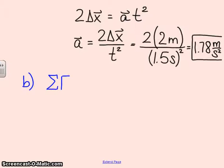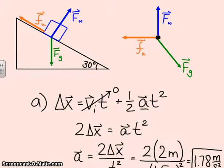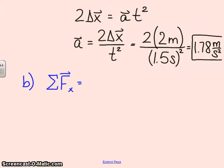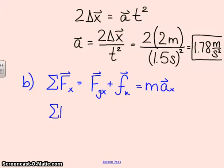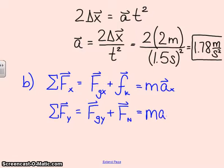So I'll do that right now in a different color here. In the x direction, we have two forces: the x component of f_g and friction. So f_gx plus f_k equals mass times acceleration in the x direction. In the y direction, we have f_gy and normal force, which equals mass times acceleration in the y direction. Now, because our block is not moving in the y direction, that means acceleration in the y direction is zero. It's not lifting up off the ramp, it's not tunneling into the ramp.